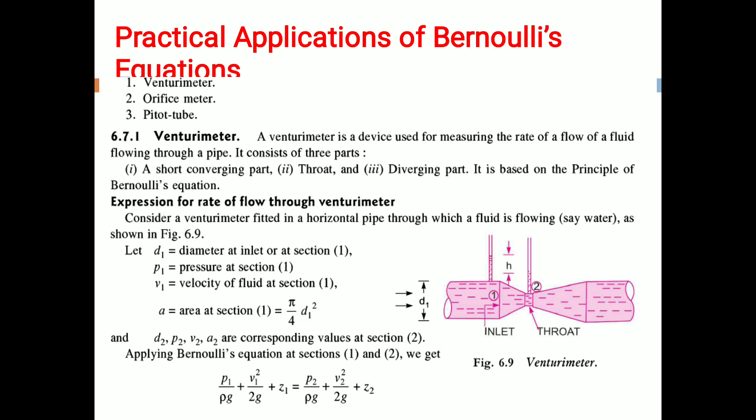The practical applications of Bernoulli's equation include the venturimeter, orifice meter, and pitot tube. Bernoulli's equation is applied to all problems of incompressible fluid flow where energy considerations are involved. A venturimeter is a device used to measure the rate of flow of fluid through a pipe. It consists of a short convergent part, a throat, and a diverging part, as shown in figure 6.9.